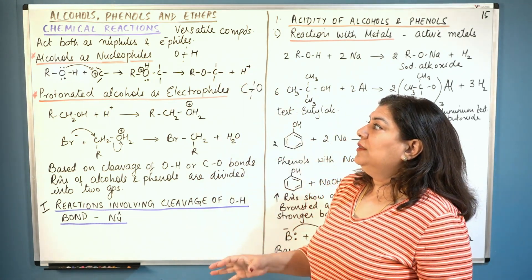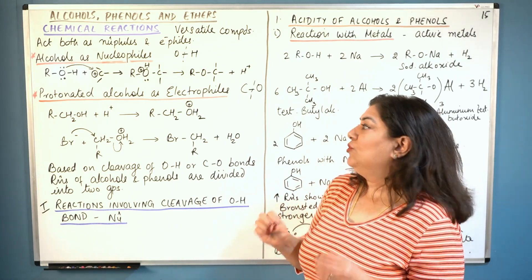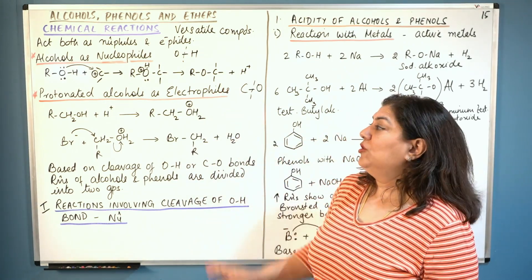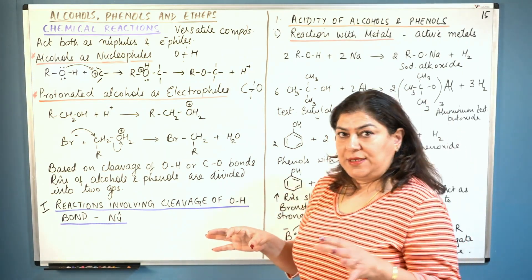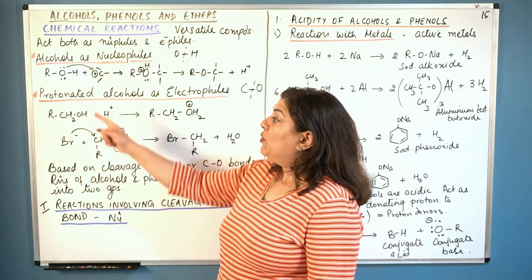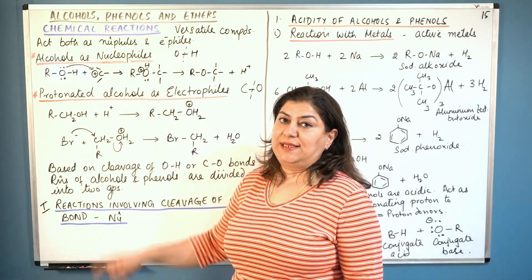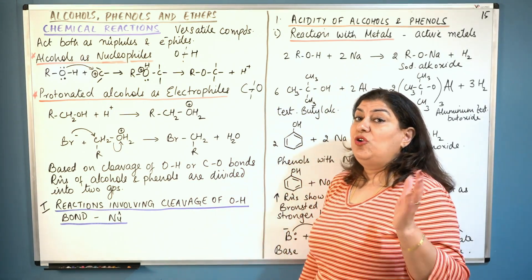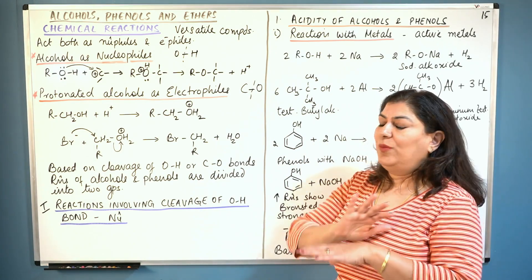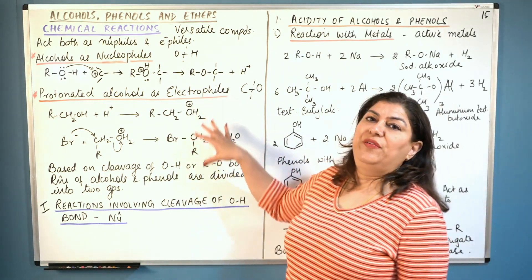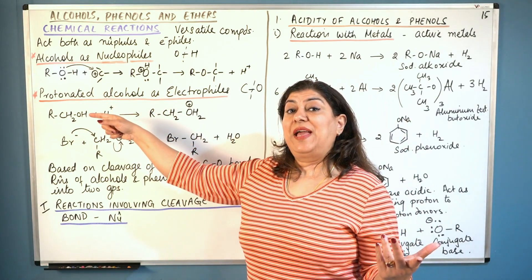This is how alcohols and phenols act as nucleophiles when the O-H bond breaks — the same thing applies to phenols. The second type of reaction is when protonated alcohols act as electrophiles. Phenols do not act as electrophiles unless reacting with zinc; this reaction is usually shown only by alcohols, and it occurs when the alcohol is protonated.